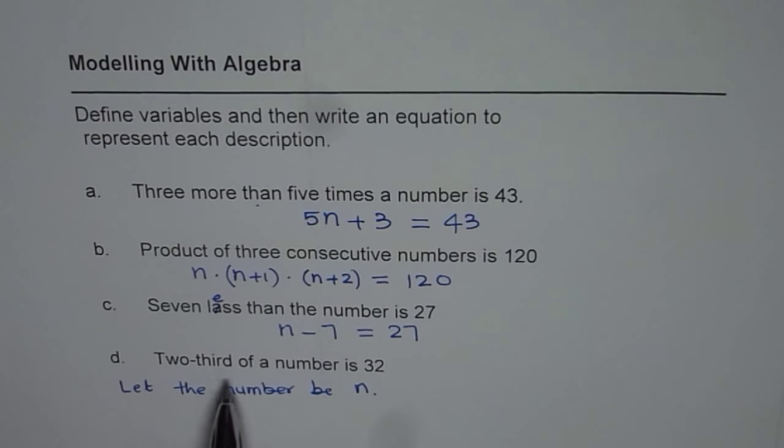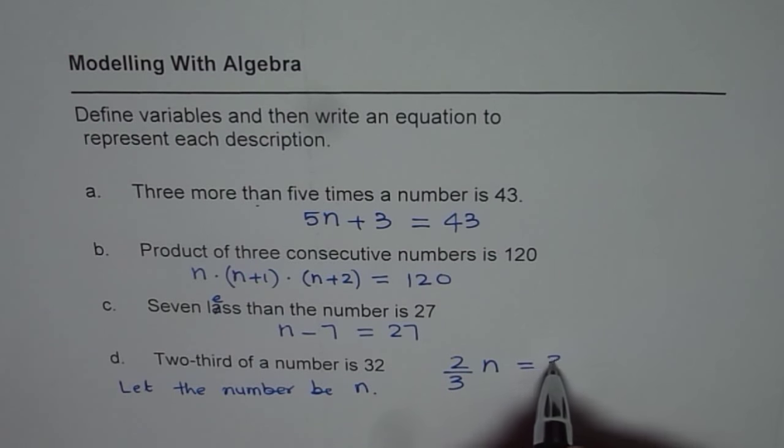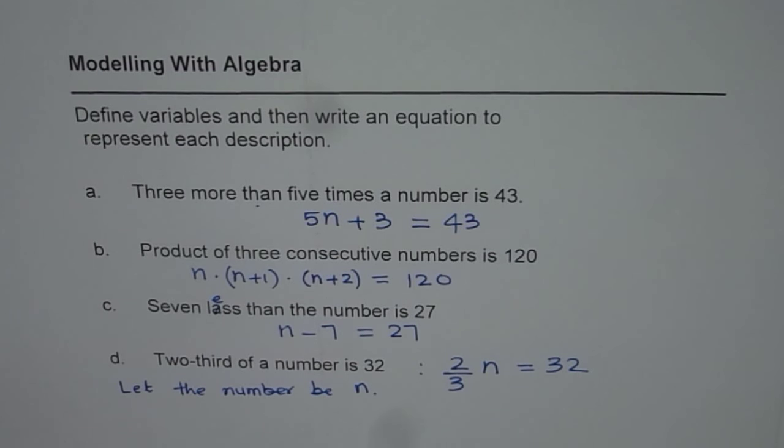D is 2 third of a number is 32. 2 third is a fraction, 2 over 3. 2 third of a number means of means times, times number is equal to 32. So that is the equation which represents the statement.